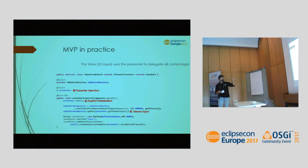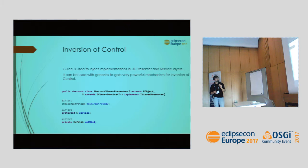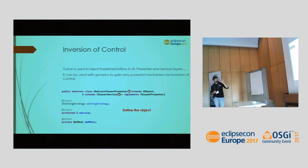You can use the presenter to get data and set the input for the table-form, and also to delegate actions. For example, in a view with a save button, the button just delegates the behavior to the underlying presenter — there's no logic in the view; we use a lambda with Java 8 syntax. Another important thing about inversion of control with Google Guice is that you can use generics.